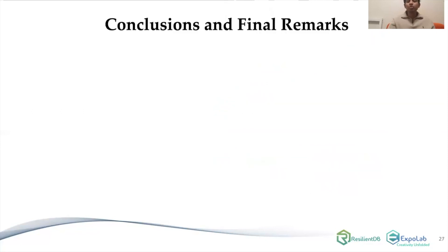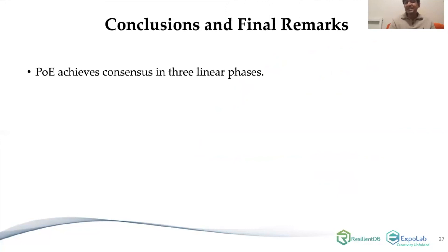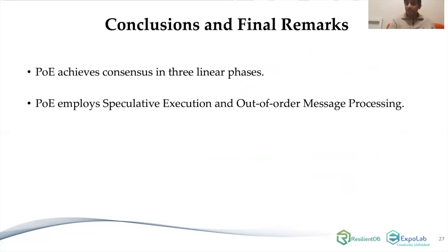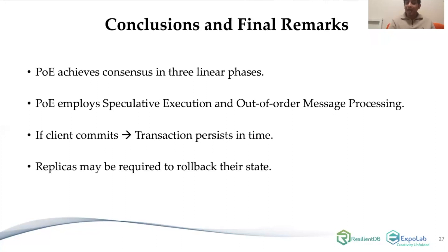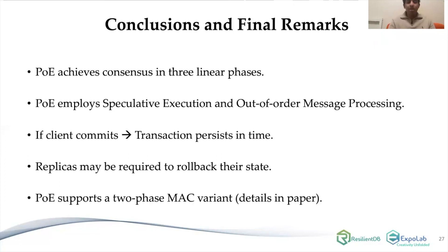To conclude: PoE is a consensus protocol that achieves Byzantine fault tolerant consensus in three linear phases. PoE employs speculative execution and out-of-order message processing to achieve higher performance. PoE guarantees that if a client commits a transaction, that transaction will persist in time, though replicas may need to roll back fraudulent transactions. PoE also supports a two-phase MAC variant design for achieving low-cost signatures.